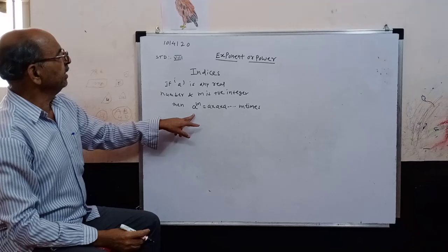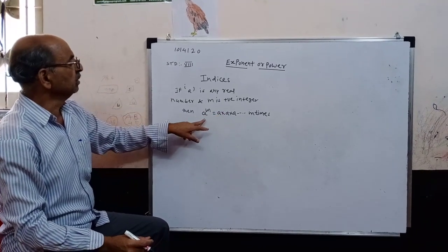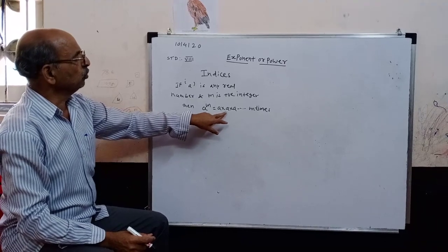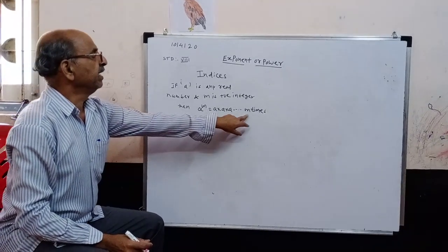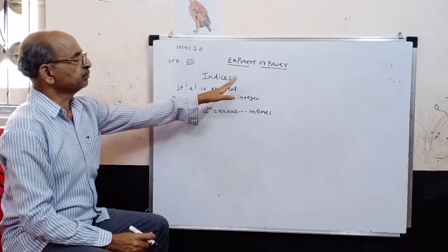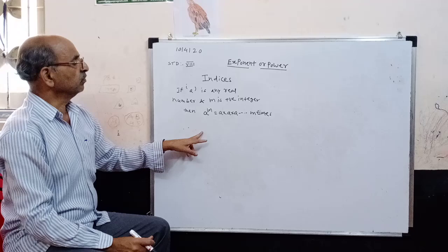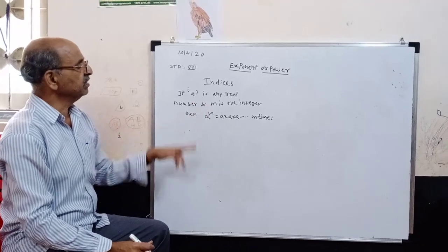If a is any real number and m is any positive integer, then a raise to m is equal to a into a into a, m times. This is called as indices or exponent or power. This we read as a raise to m, where a is base and m is index.